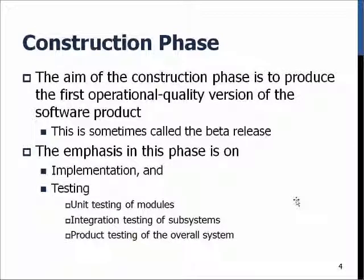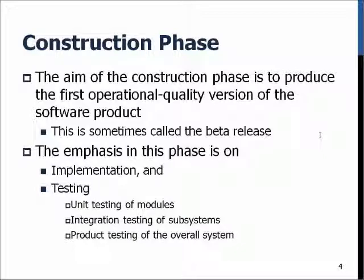Overall, the construction phase aims to produce the first operational quality version of the software product — in games this is usually called a beta release. It means the product is complete and has all the features, but it hasn't yet been tested with a real audience or customers, or made functional in the target environment. The emphasis is on implementation, testing, quality assurance, and related tasks.